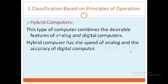The third type is hybrid computers. A hybrid computer is a type of computer that combines the desirable features of both analog and digital computers. It is mostly used for automatic operations of complicated physical processes and machines. Nowadays, analog-to-digital and digital-to-analog converters are used for transferring data into a suitable form for either type of computer.